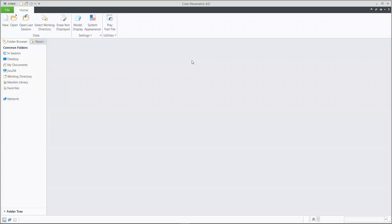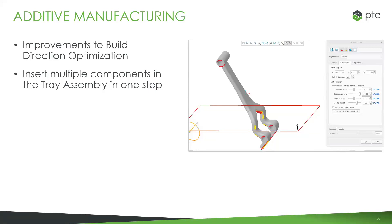There's also a brief area I wanted to touch on: improvements to build direction optimization. This is something we introduced back in Creo 6 as a tool to help analyze and optimize the orientation of your part for printing — whether that's minimizing support structures, optimizing component placement, or reducing build time. Previously you could optimize for just one of those goals, but now you can optimize against all of them simultaneously, giving a weighting or percentage to each. We've also enhanced the tray assembly for adding multiple components: during the assembly process you can now specify how many components you want to add all within one step, rather than adding a component and then patterning it out.